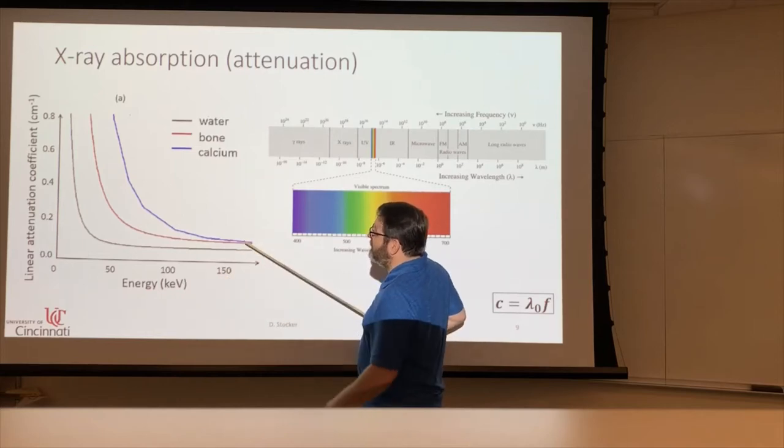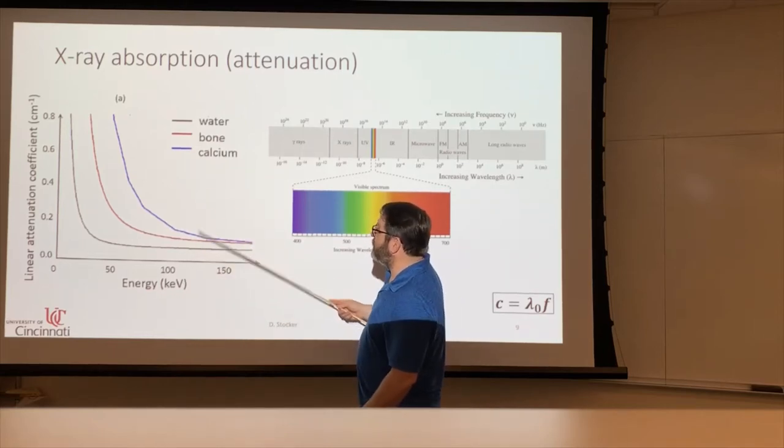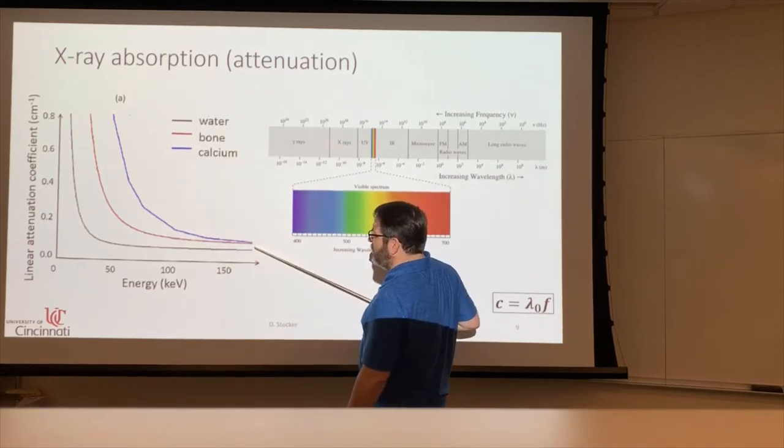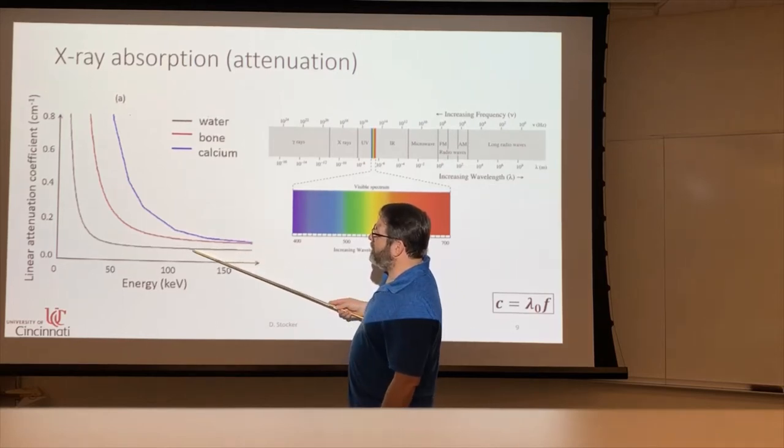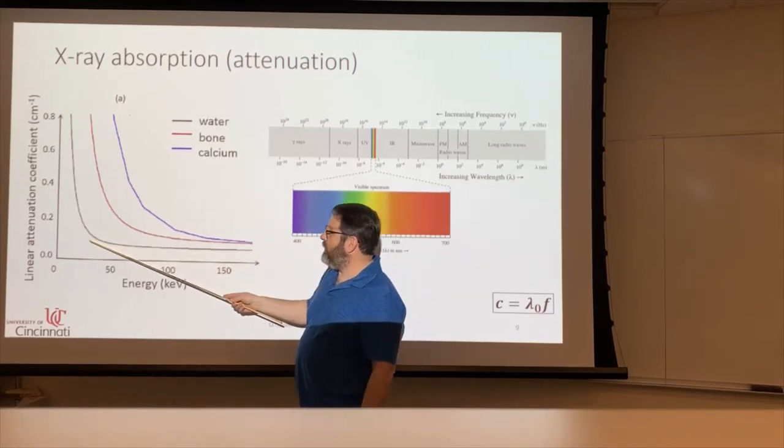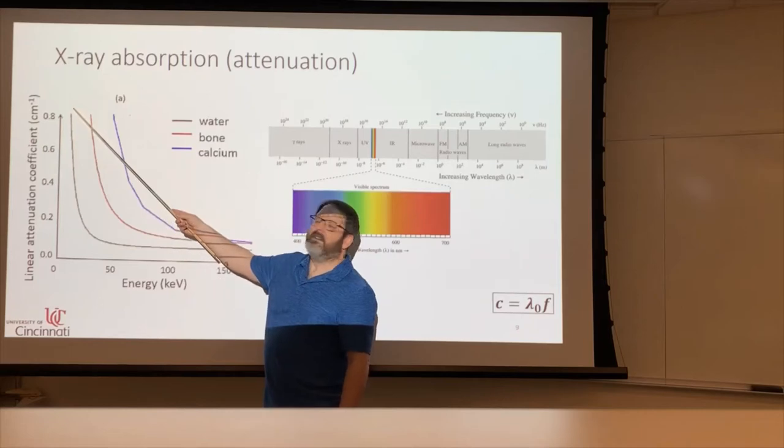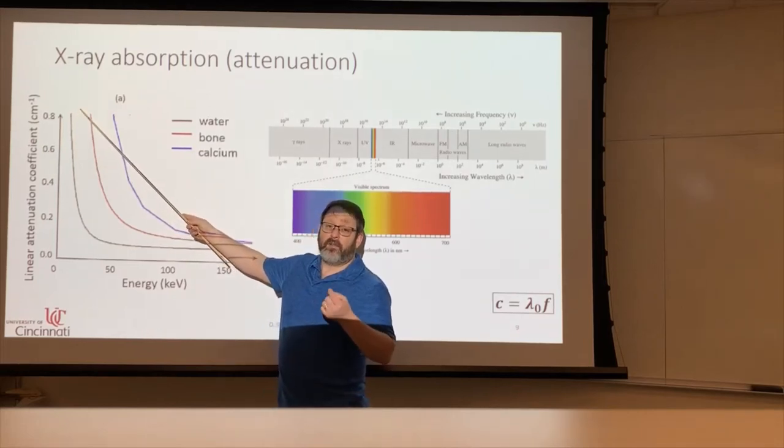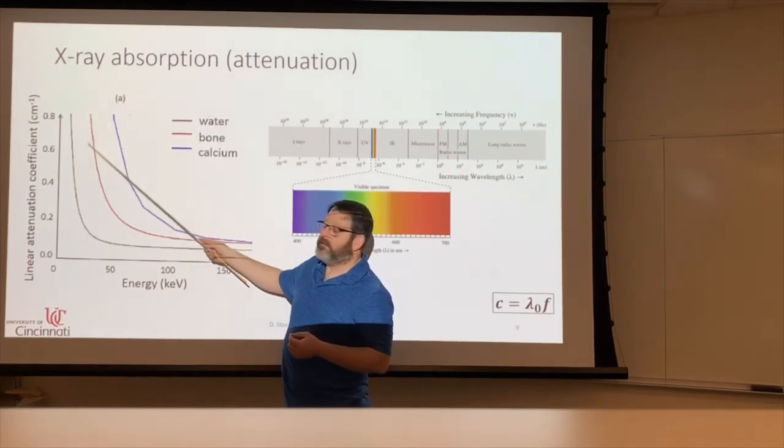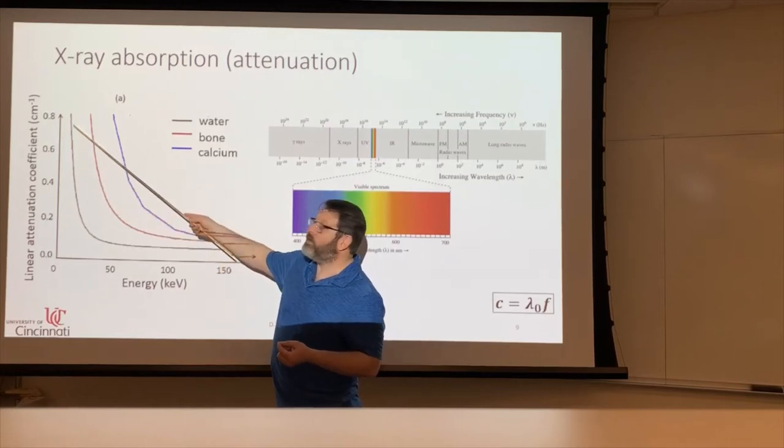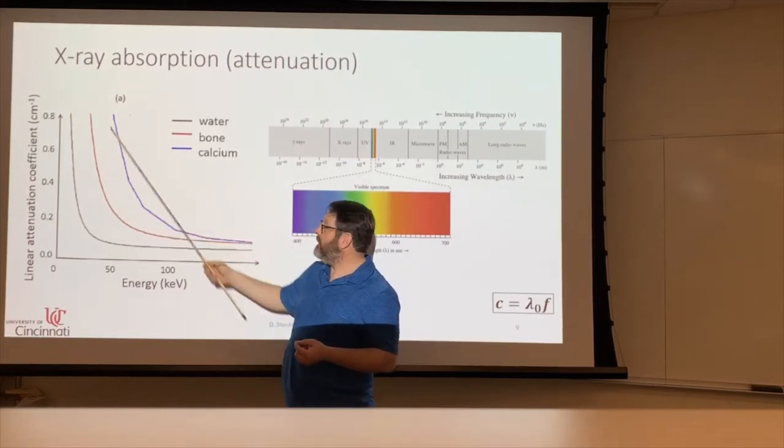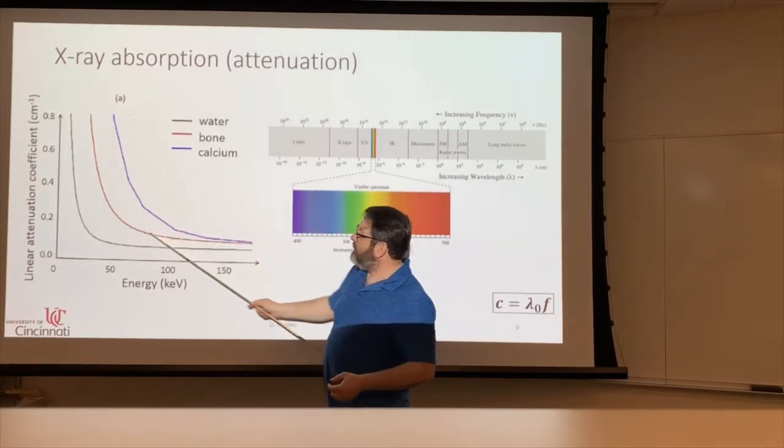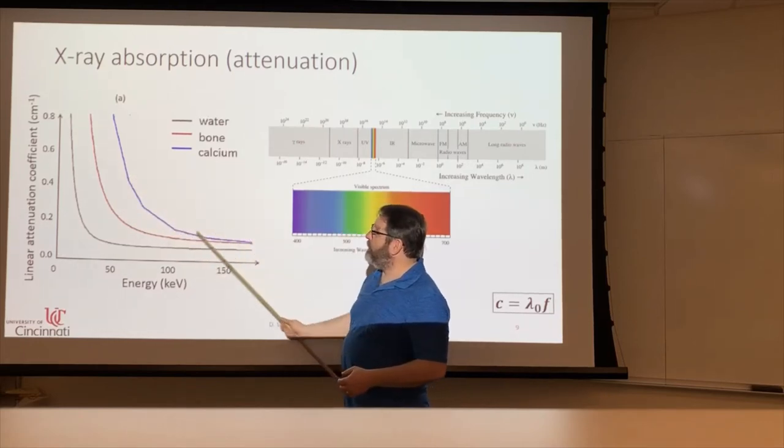Now the interesting thing is there are three different lines drawn in this graph. One is for water. You can see that water goes quite far through, and then as you get lower and lower in energy, the water absorbs the x-rays in a shorter and shorter distance. The same is true for bone and pure calcium.